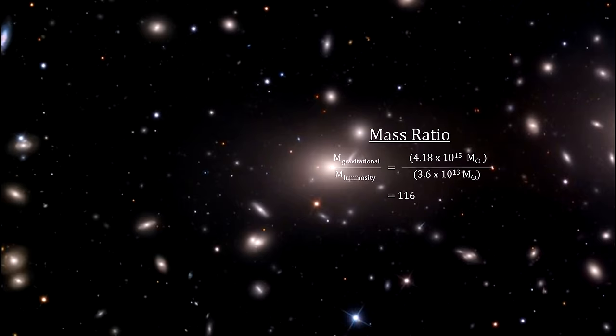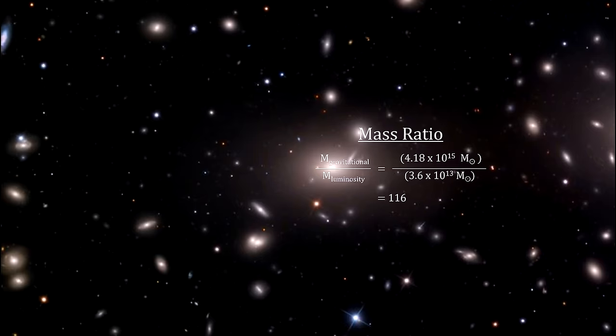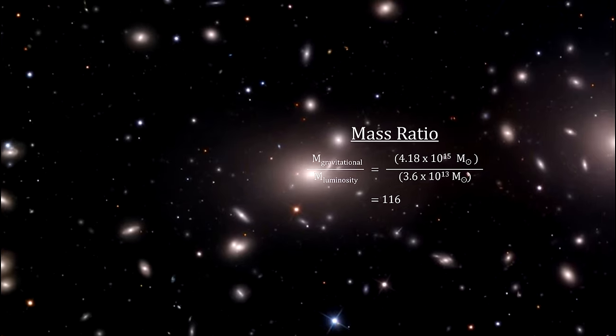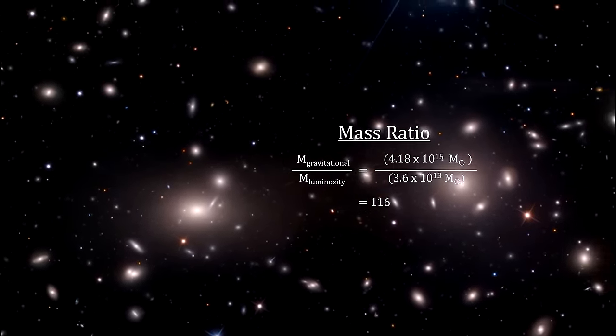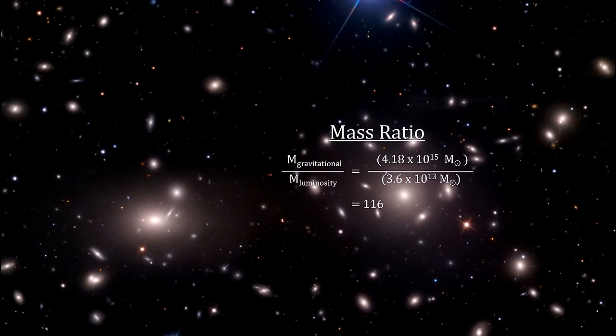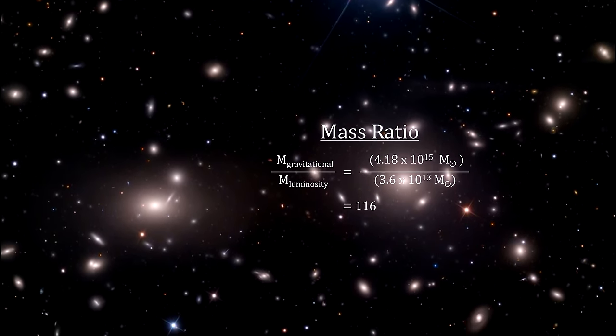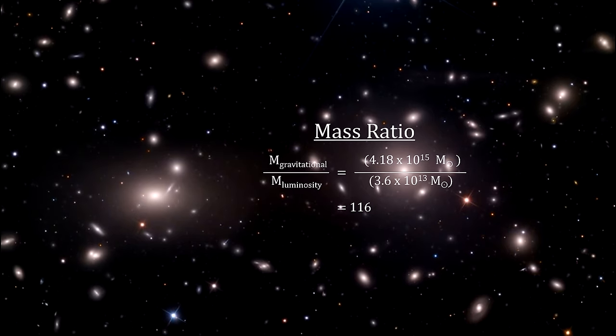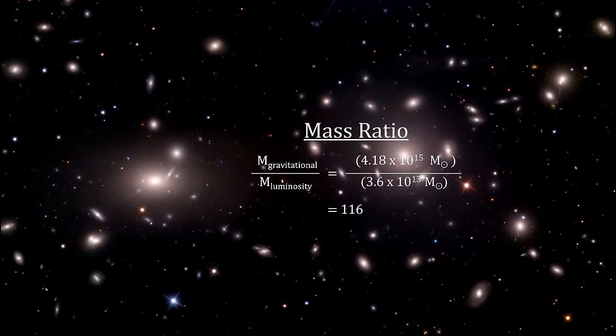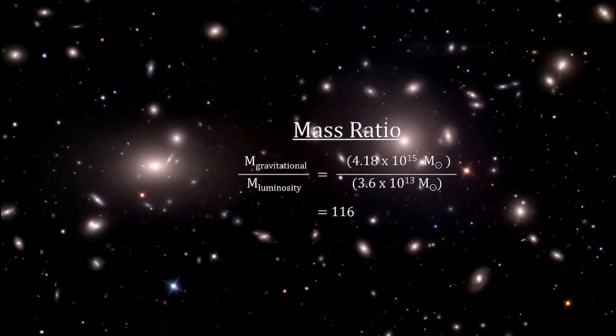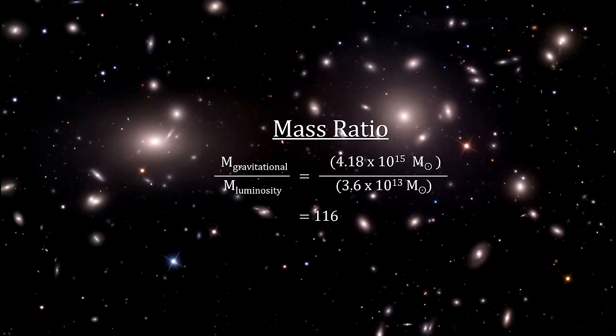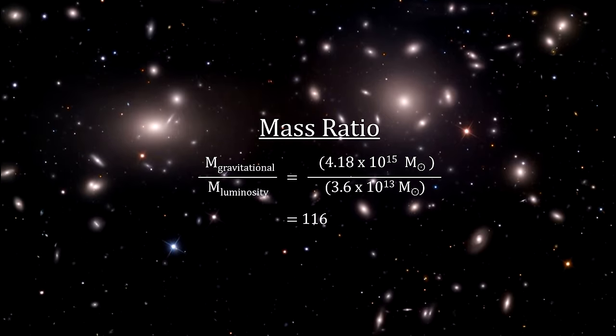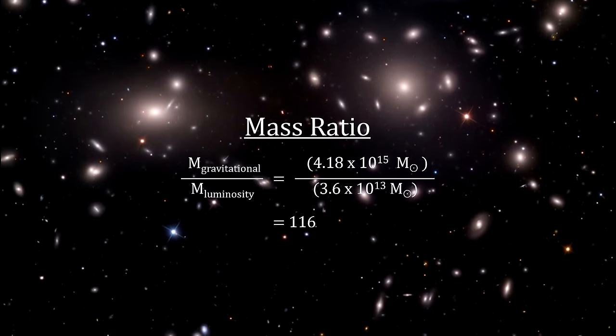In other words, the motion of the galaxies in the cluster indicated a mass that was over a hundred times the mass from luminous matter. Zwicky concluded that either the laws of gravity as we know them, Newton's and Einstein's, did not work for volumes as large as the Coma cluster, or the luminous matter is only a very small part of the total matter of the cluster. He called the rest of the matter dark matter and suggested that gravitational lensing could help quantify this dark matter. But back in the 1930s, nobody believed him.